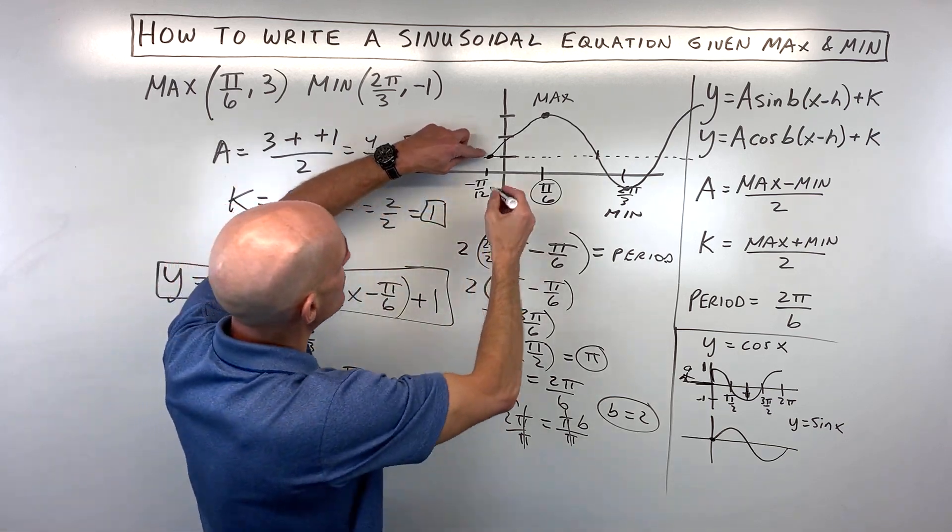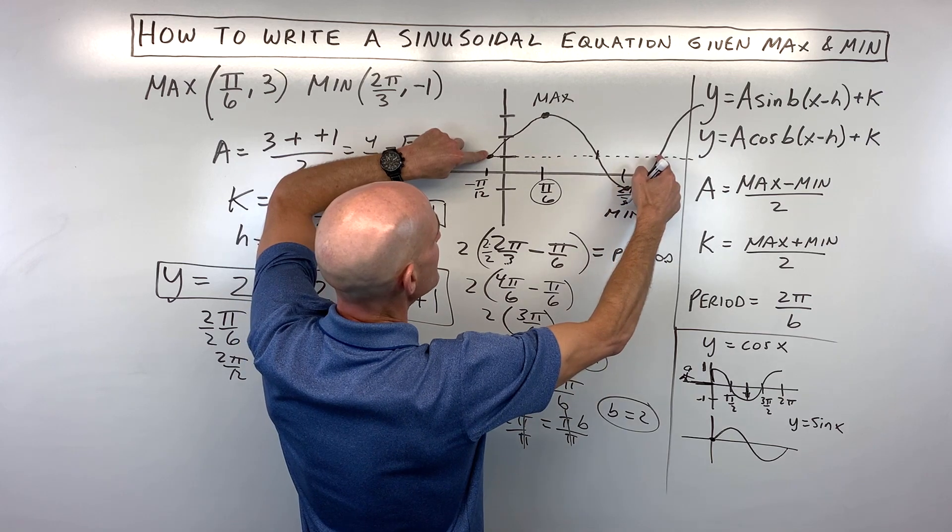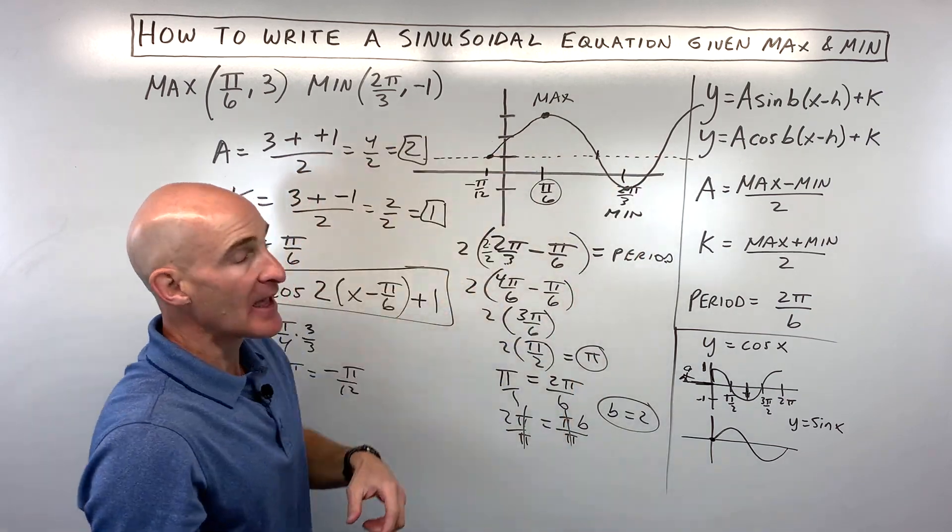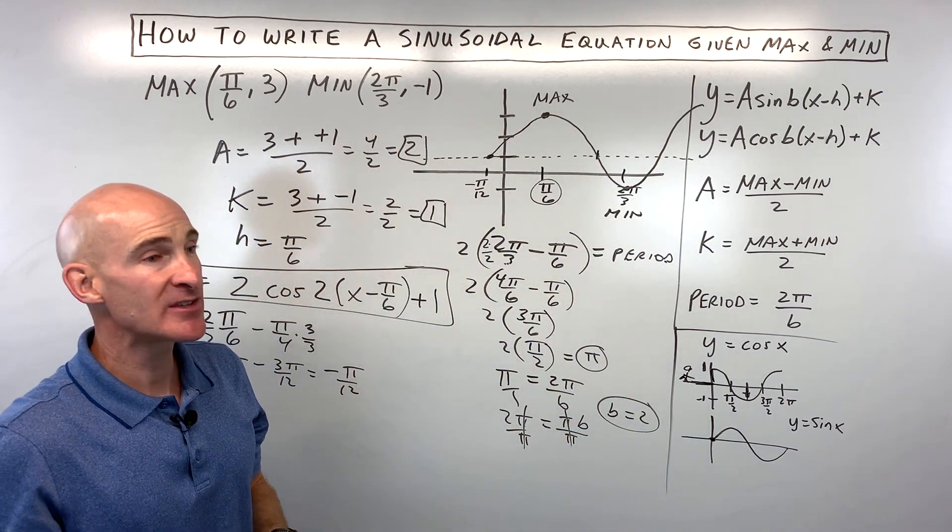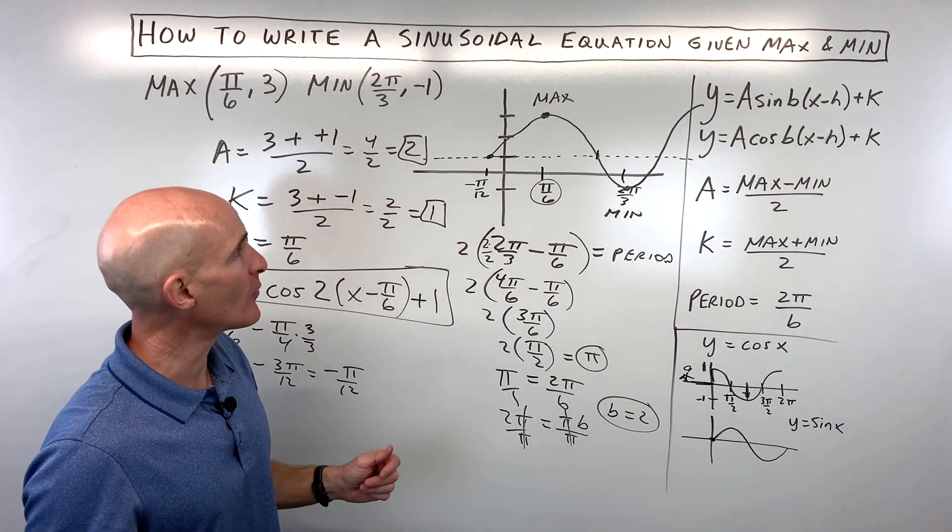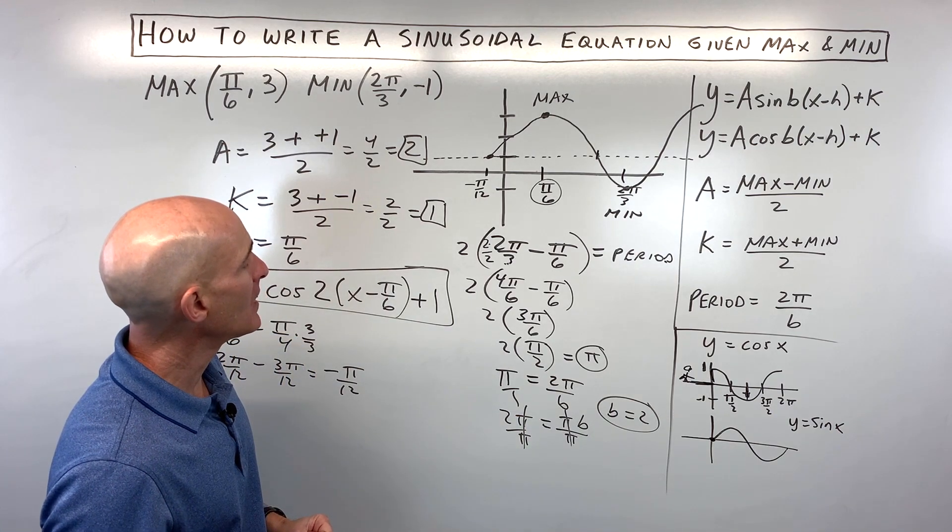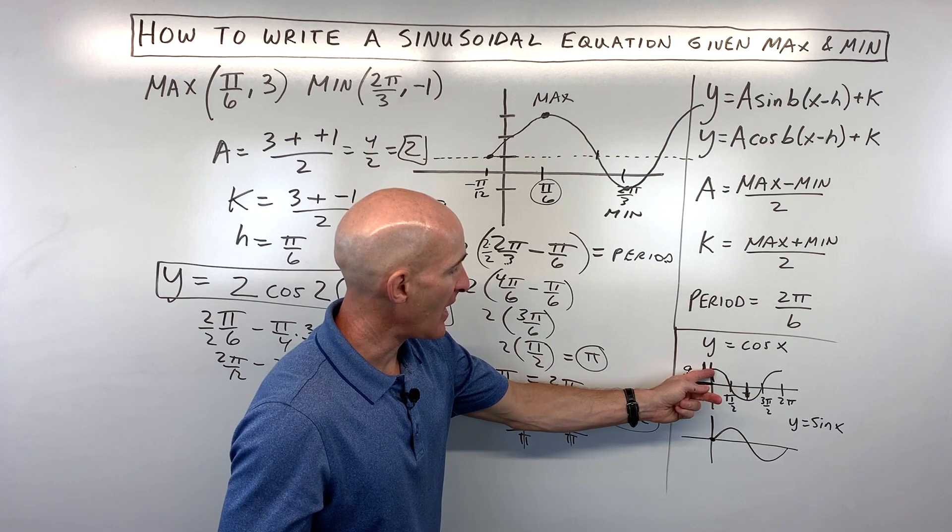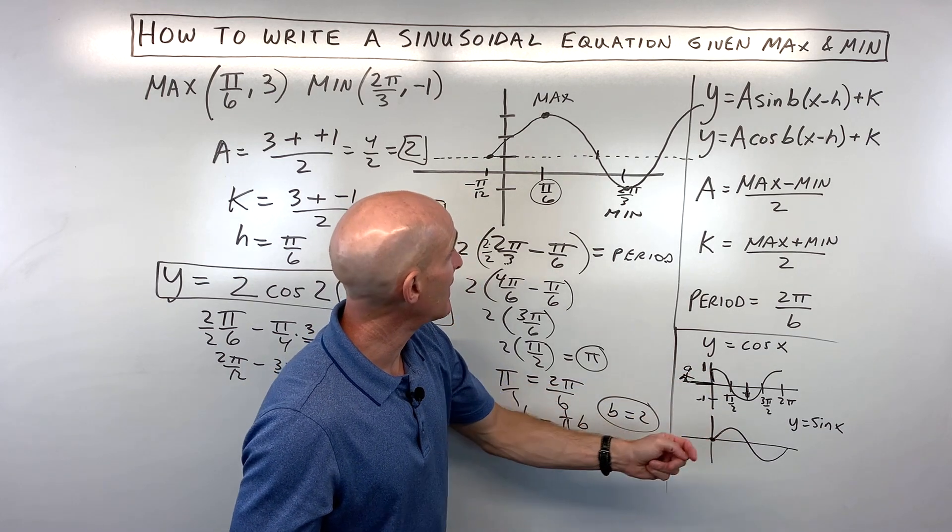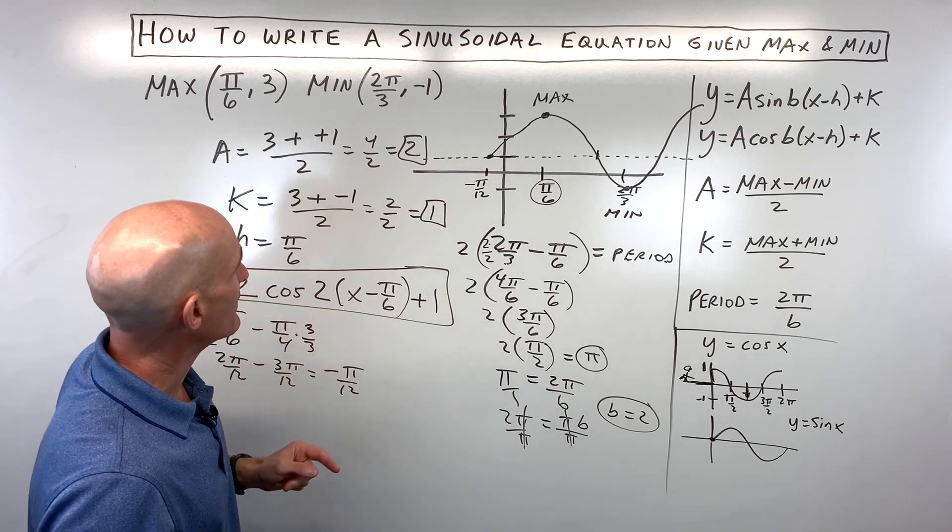Again, sine and cosine are basically the same graph. It's just like this S-shaped wave, this sinusoidal wave. It's just a matter of where's your starting point? Where's the initial point? If it starts at the max, we think about a cosine. If it starts at the midline, we tend to think of the sine graph. So let's look at this as a sine graph now.